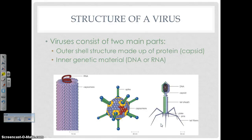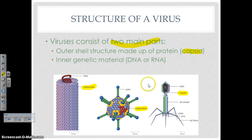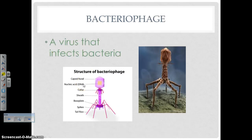Viruses consist of two main parts: the protein capsid, which is the outside shell, and the inner genetic material — nucleic acid, either DNA or RNA. Here's the capsid in this virus, here's the capsid in this virus, and here's the capsid for our bacteriophage. Inside we have the genetic material — this one has RNA, and the bacteriophage has DNA. So two main parts: the outer protein capsid and the inner genetic material.